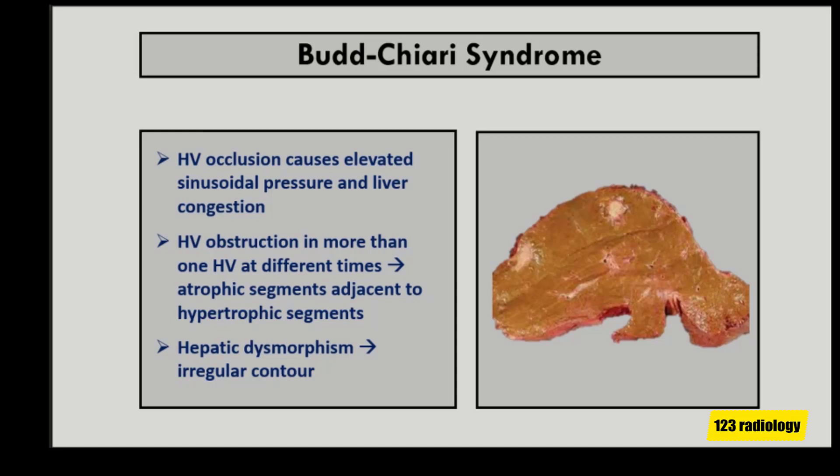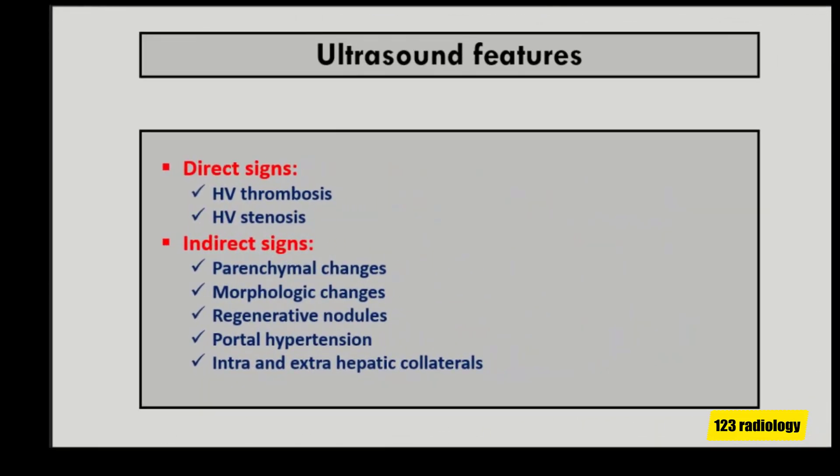The most characteristic feature of hepatic dysmorphism is irregular liver contour. Ultrasound features of Budd-Chiari syndrome are classified into direct signs, including hepatic vein thrombosis and hepatic vein stenosis, and indirect signs, including parenchymal changes, morphologic changes, regenerating nodules, portal hypertension, and intra- and extra-hepatic collaterals.